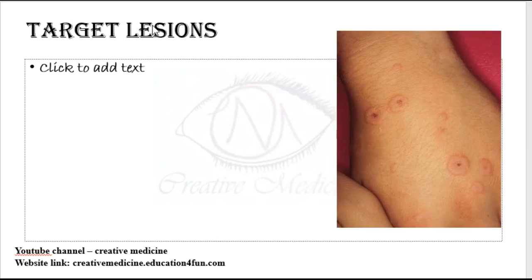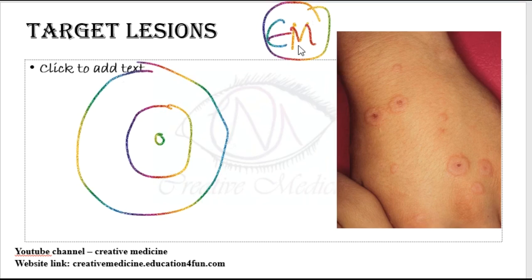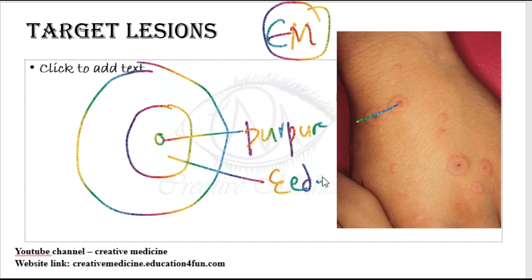Target lesions. Target lesions are mainly seen in erythema multiforme and they contain three zones: a central zone of purpura which is bluish in color, surrounded by a zone of edema, which is again surrounded by a zone of erythema.